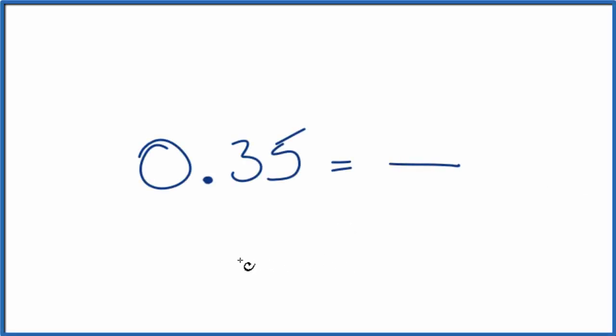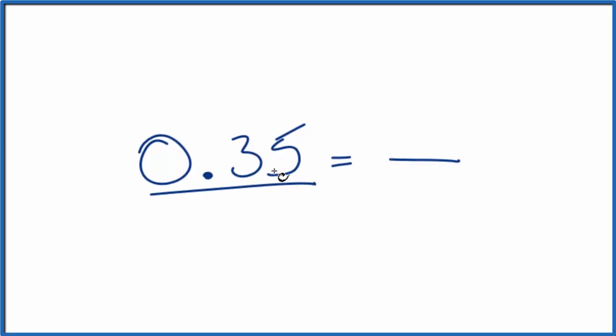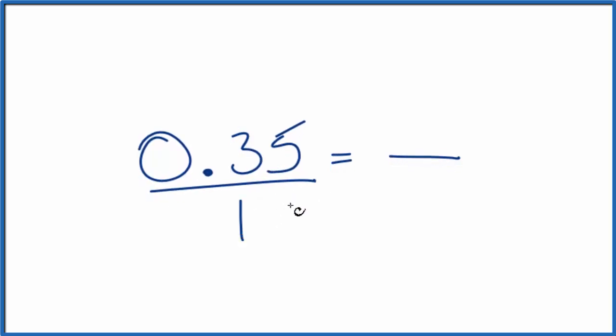Let's express the decimal 0.35 as a fraction where we have a numerator over a denominator. To start with, let's just divide 0.35 by 1. It's the same thing, we're only dividing by 1, but now we have the start of fraction form.